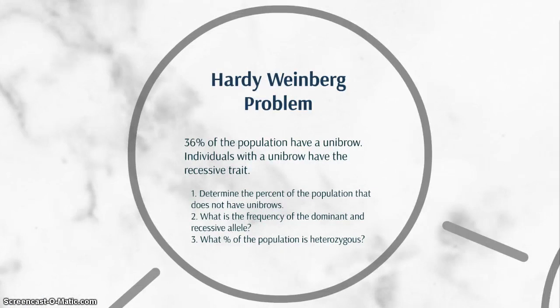What we have here is 36% of the population have a unibrow. Individuals with the unibrow have the recessive trait. Most of the time you're going to be given something like this to start. You will need to know that these individuals that have the unibrow are homozygous recessive. So the frequency of individuals that are homozygous recessive are represented in the equation by q squared. Essentially what we know so far to start is 36%, or 0.36 of the individuals, have q squared equal to q squared.